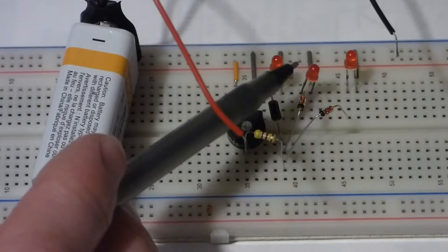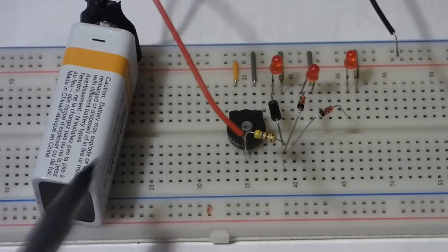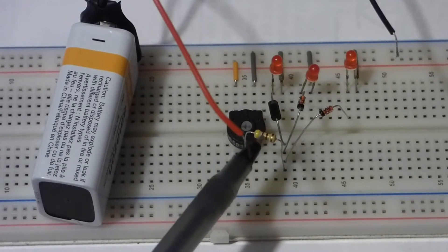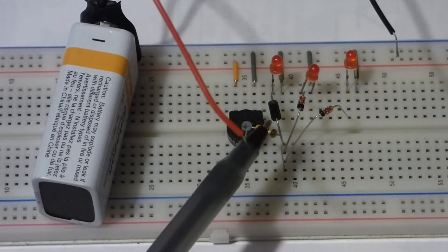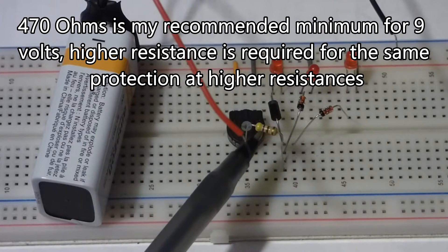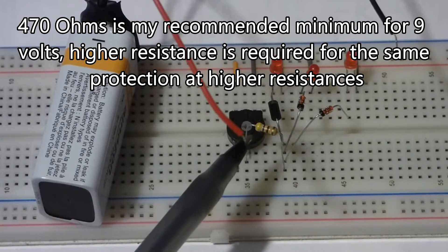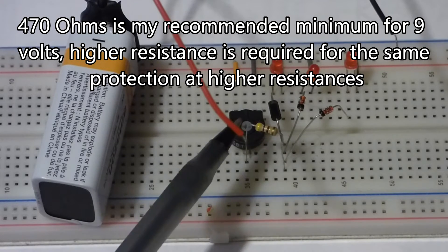You might damage sensitive components like LEDs if you have too much current go through them. That's why I usually use at least a 470 ohm resistor in my circuit. That lowers the current to protect any components I use in my circuits.